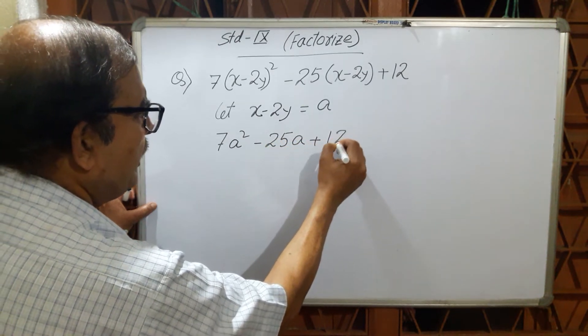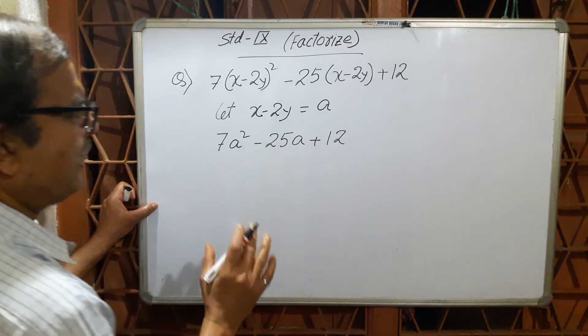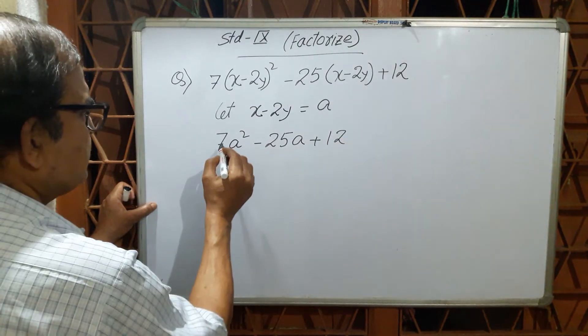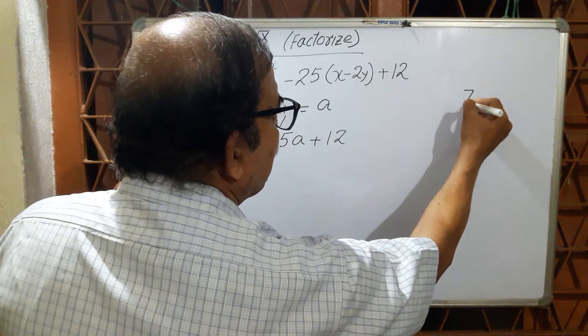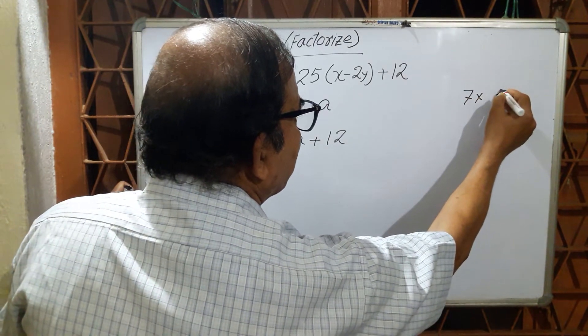Middle term factor, the most important thing is 7 × 12. That is 7 × 12 equal to 84.